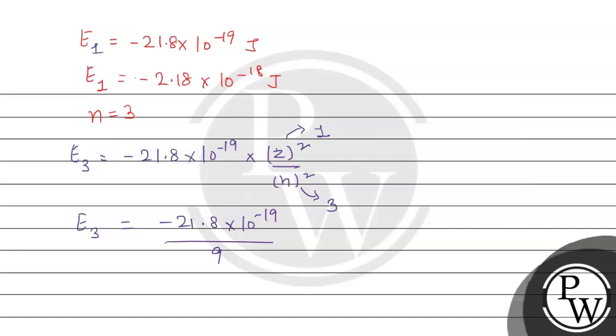We can rearrange 21.8 × 10^-19 and write it as 2.18 × 10^-18 joules divided by 9, and this term is...